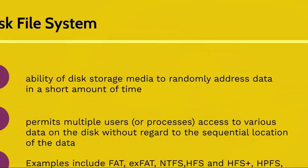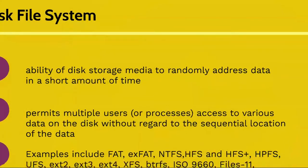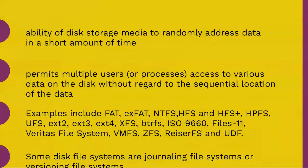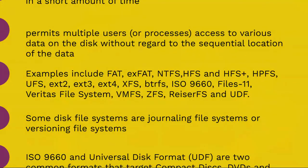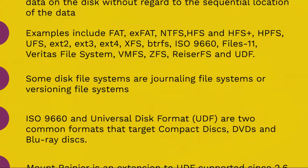A disk file system takes advantage of the ability of disk storage media to randomly address data in a short amount of time. Additional considerations include the speed of accessing data following the initially requested data and the anticipation that the following data may also be requested. This permits multiple users or processes to access various data on the disk without regard to the sequential location of the data. Examples include FAT, EXFAT,